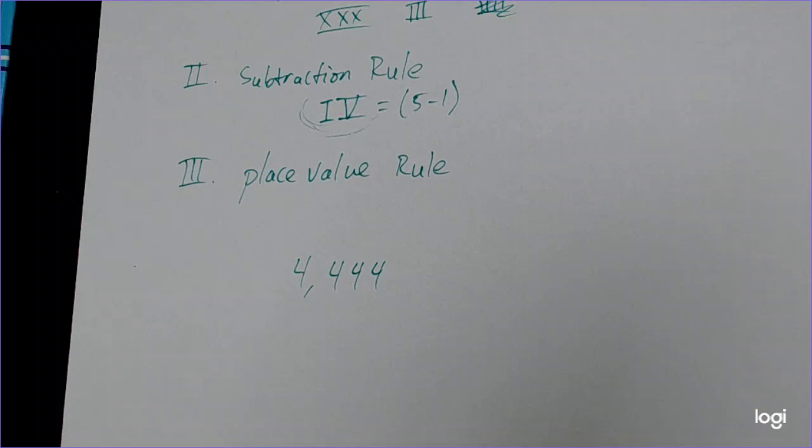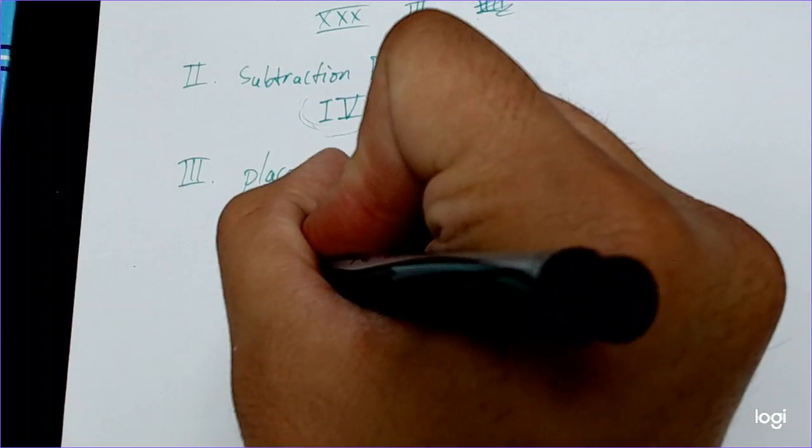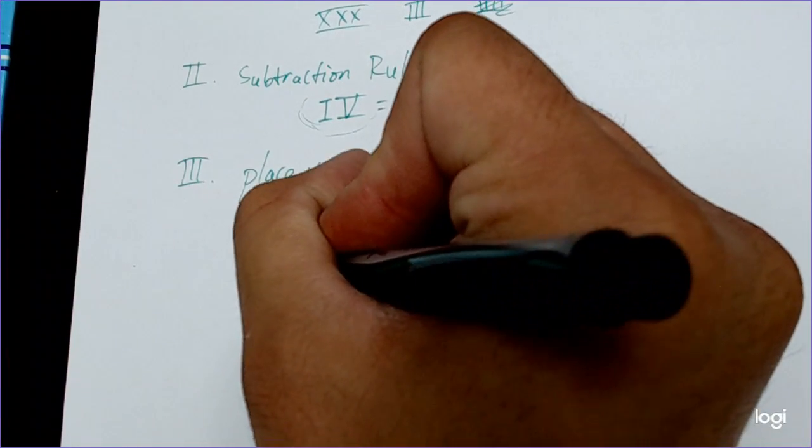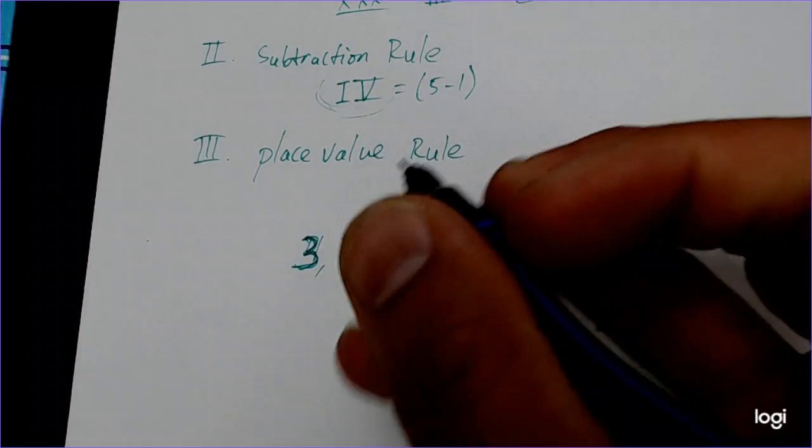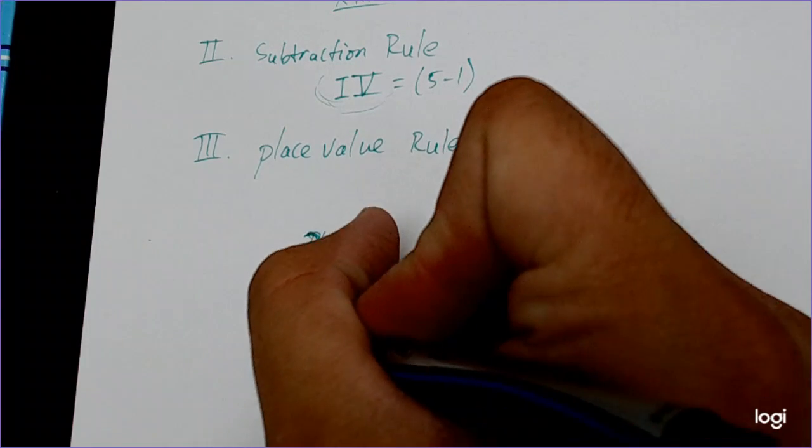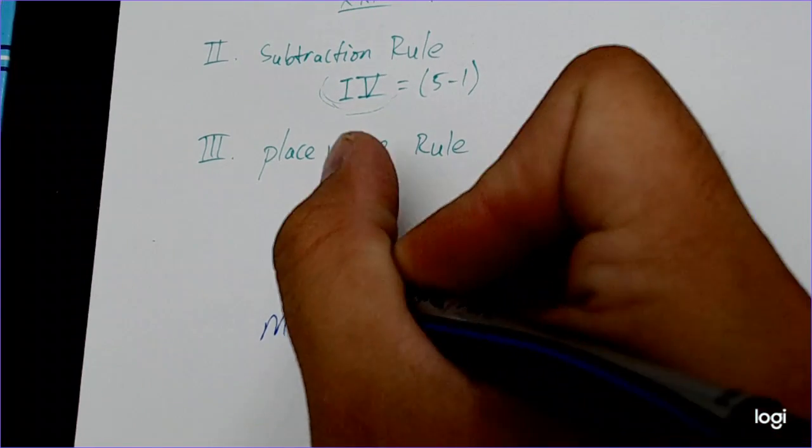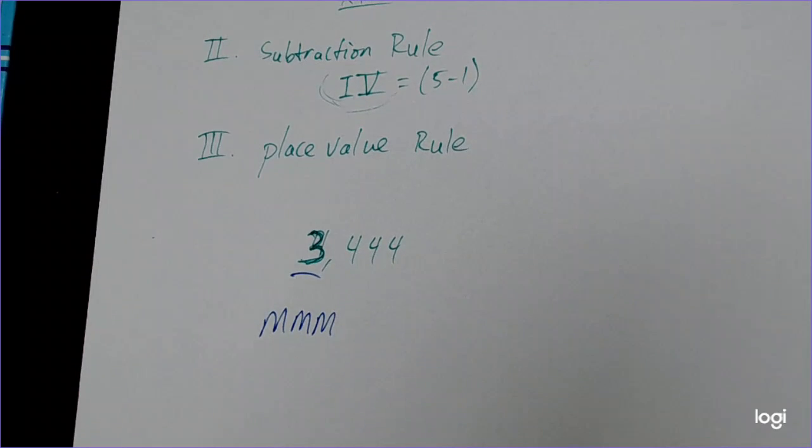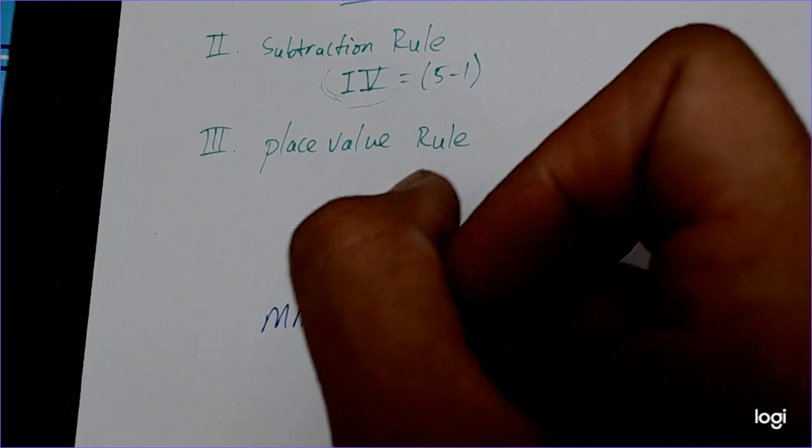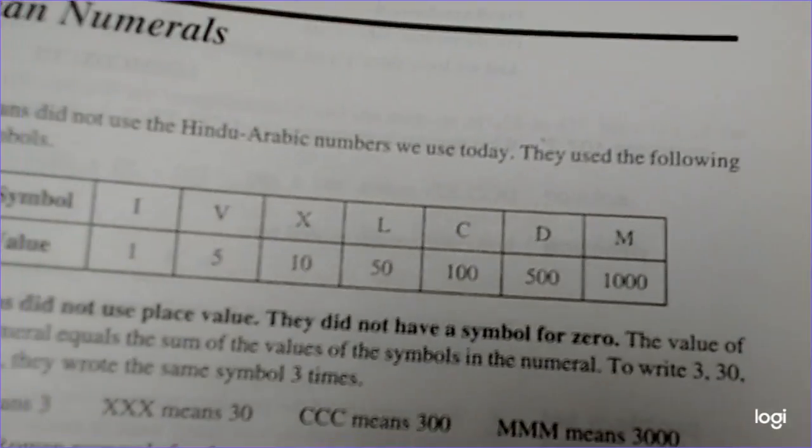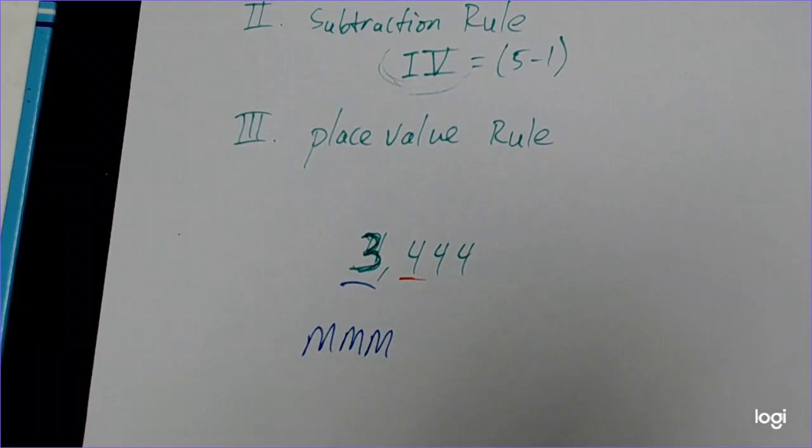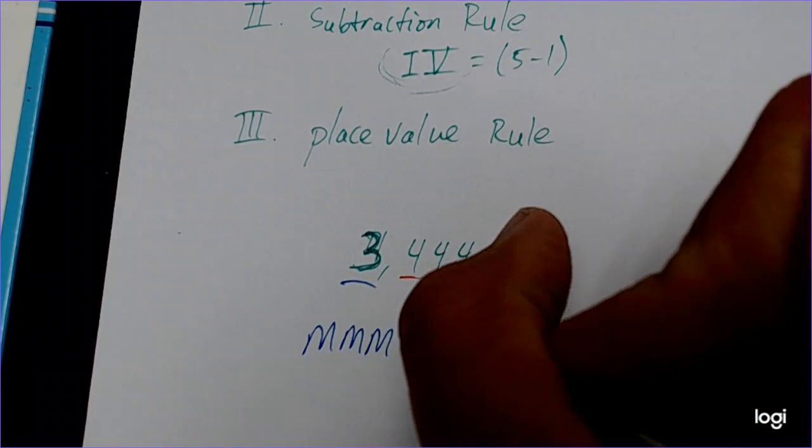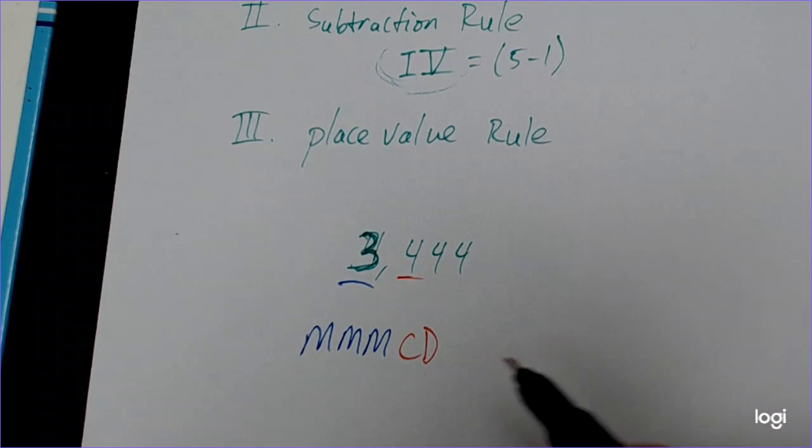Oh wait, I can't do 4,000. I don't know the Roman symbol for 5,000. We'll make this 3,444. So what I would do is I would write MMM. That is the thousands place value. Next, I go to the hundreds place value. Now I need to write the number 400. To write the number 400, I have the number 500 minus 100, because I can't put C four times in a row. So I'm just going to put CD. That's one number. That's the 400 place value.